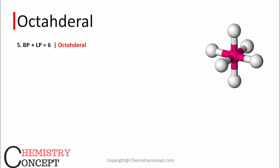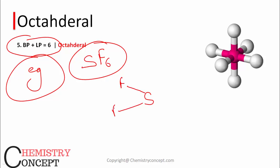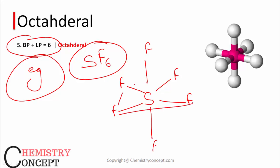Next is octahedral — where lone pair plus bond pair equals 6. Example: SF6. Sulfur has 6 electrons, and all 6 are used to form bonds with 6 fluorine atoms. The structure is octahedral with a bond angle of 90 degrees.